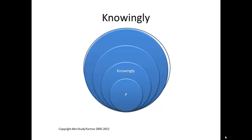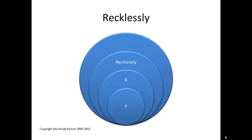Now draw a bigger circle that encompasses the first two, giving enough space so your P and K are lined up neatly. It's got to be neat or you won't learn anything. In that next bigger circle, we're going to write R for Recklessly. You're aware of a substantial and unjustifiable risk.